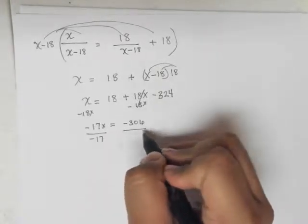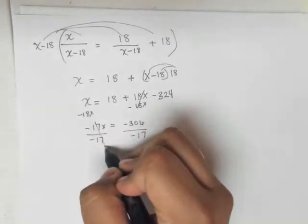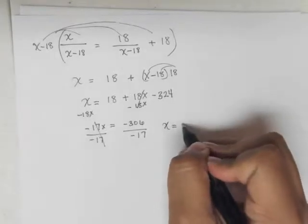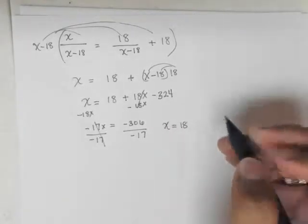Divide both sides by negative 17. And we get x equals, quick calculation, 18. But wait!